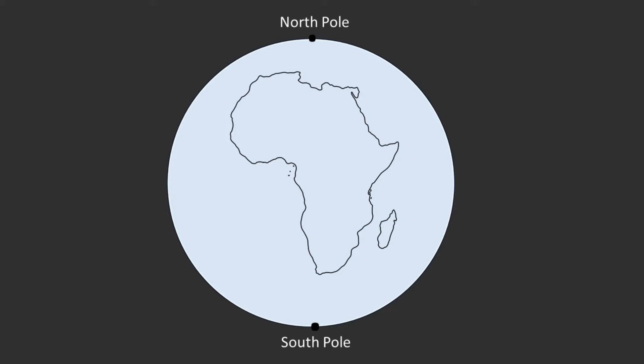The South Pole is the southernmost point on Earth. It is situated on the continent of Antarctica — a huge icy continent at the southern end of the Earth. There is lots of snow, ice, and freezing temperatures at the South Pole.